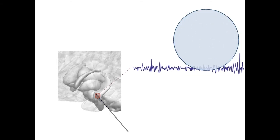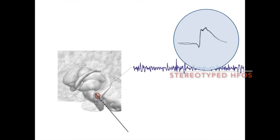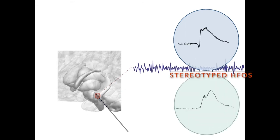We observed that HFOs from the seizure onset zone present repetitive waveforms. These highly similar HFOs may have different patterns but repeatedly appear throughout the recording.